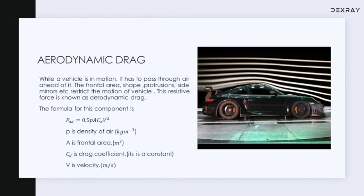The other main component of tractive force is aerodynamic drag. Have you seen sports cars? If you look at sports cars, we can see that the frontal area of these vehicles is kept minimum. This is because while the vehicle is in motion at very high speed, it has to pass through the air ahead of it. So the frontal area including the shape, protrusions, side mirrors etc. are kept minimum. This opposition force put forward by the air while the vehicle is moving forward is known as aerodynamic drag.